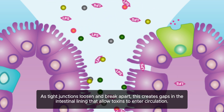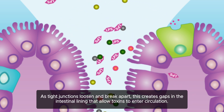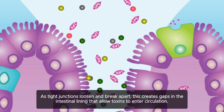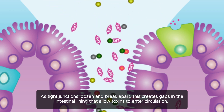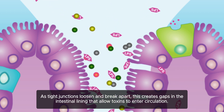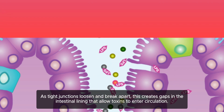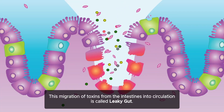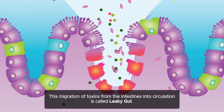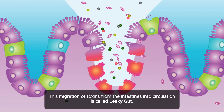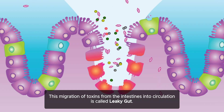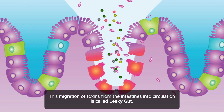As tight junctions loosen and break apart, this creates gaps in the intestinal lining that allow toxins to enter circulation. This migration of toxins from the intestines into circulation is called leaky gut.